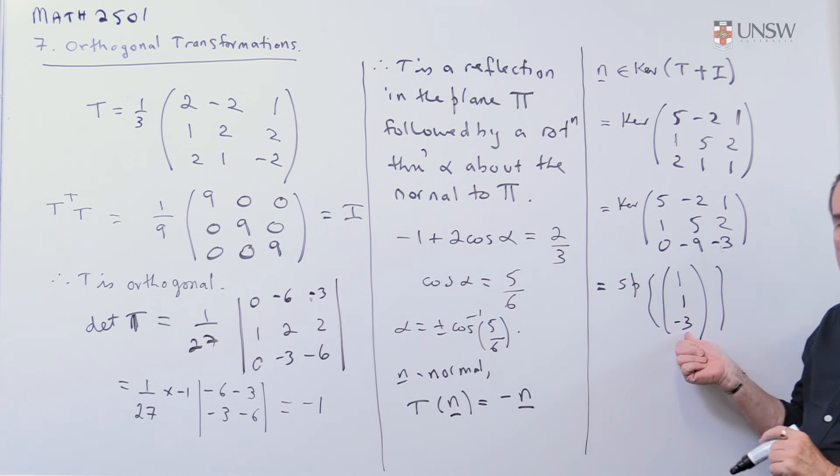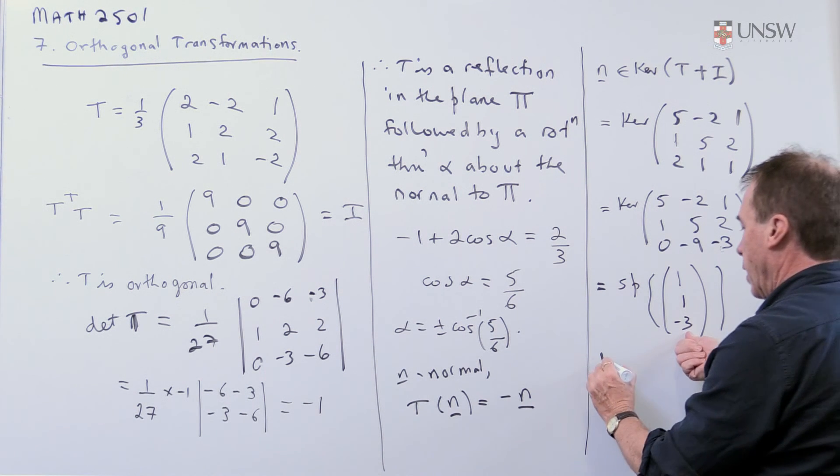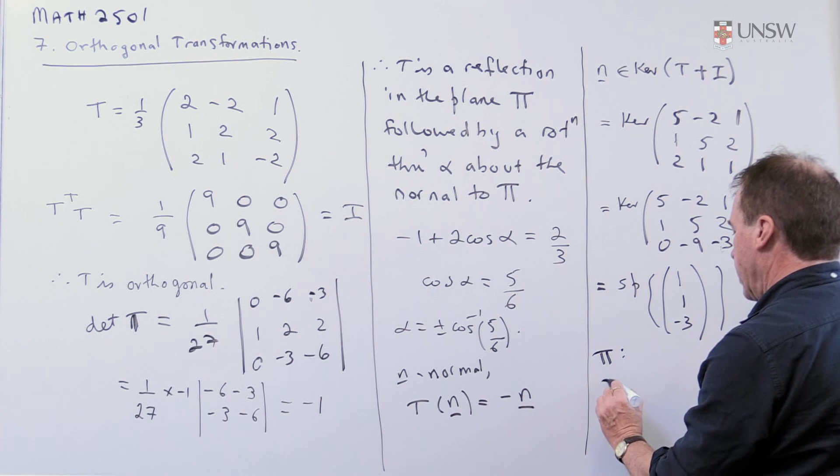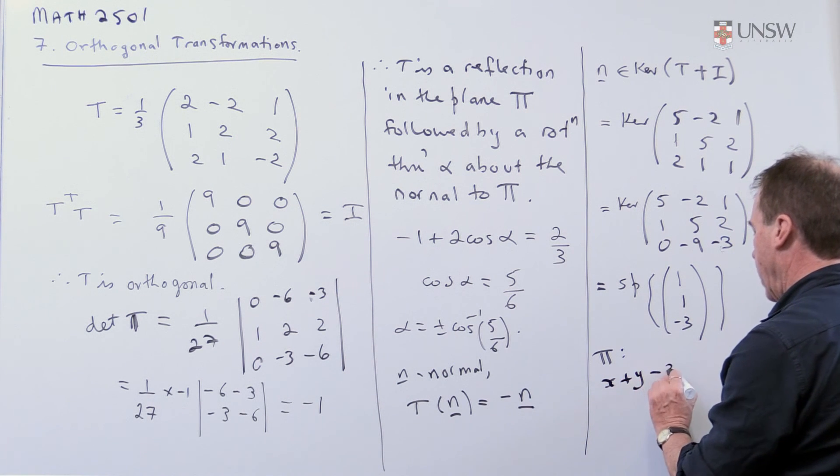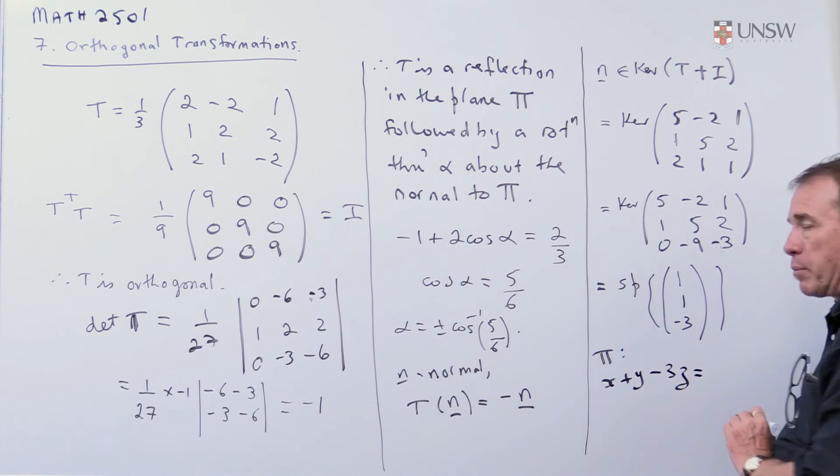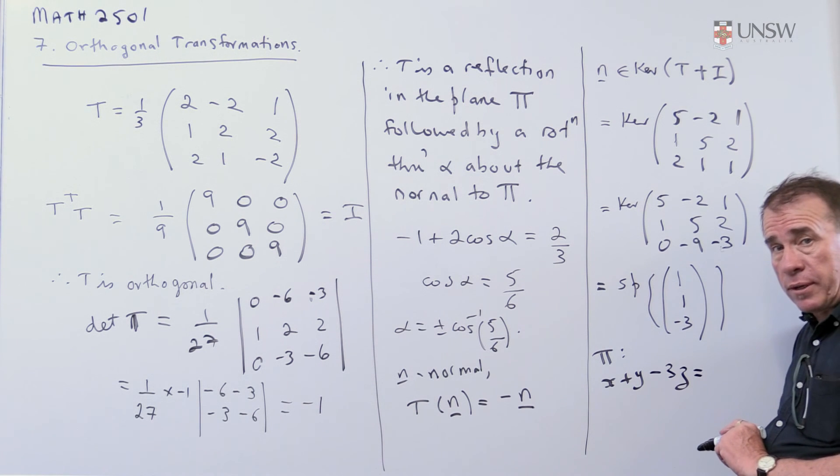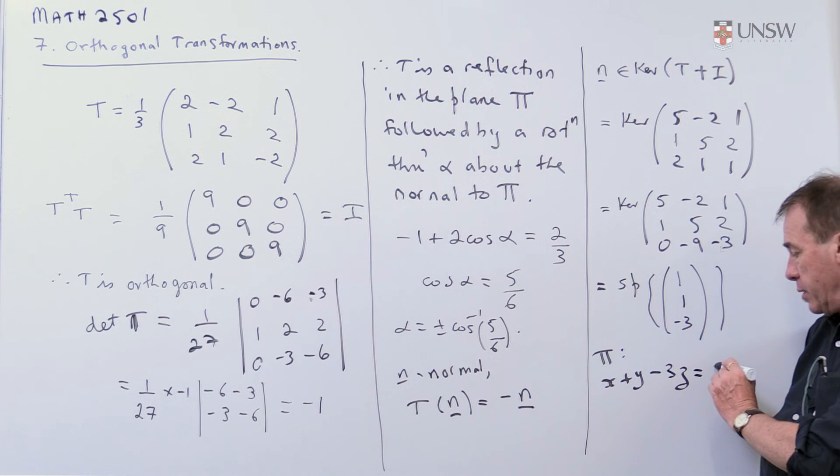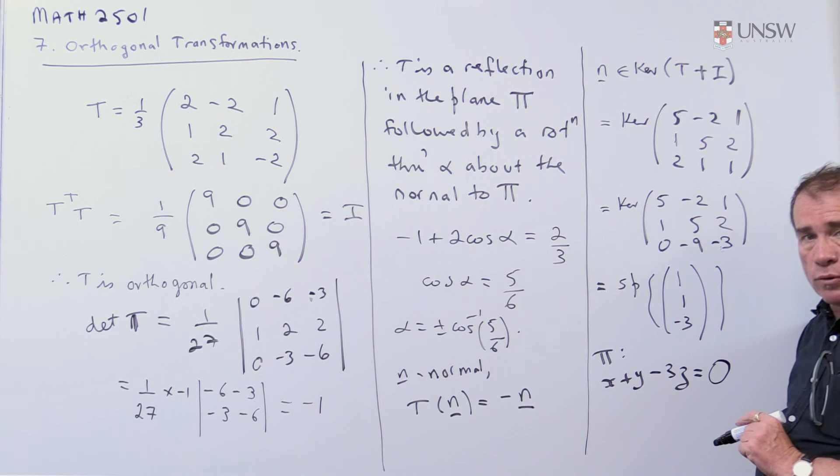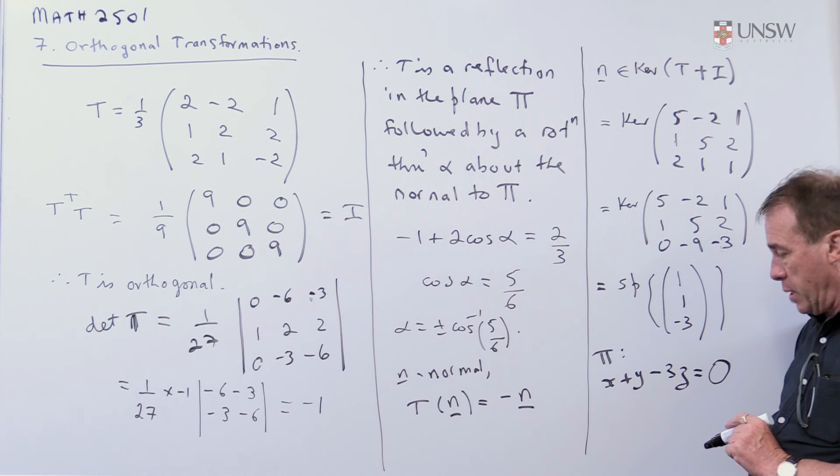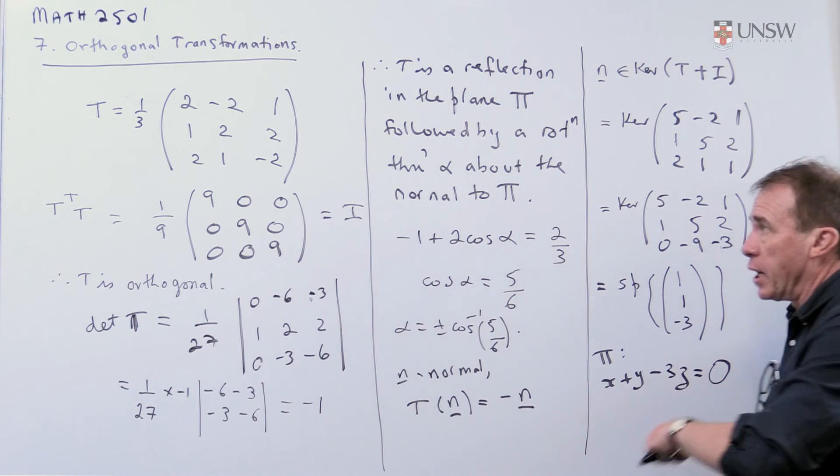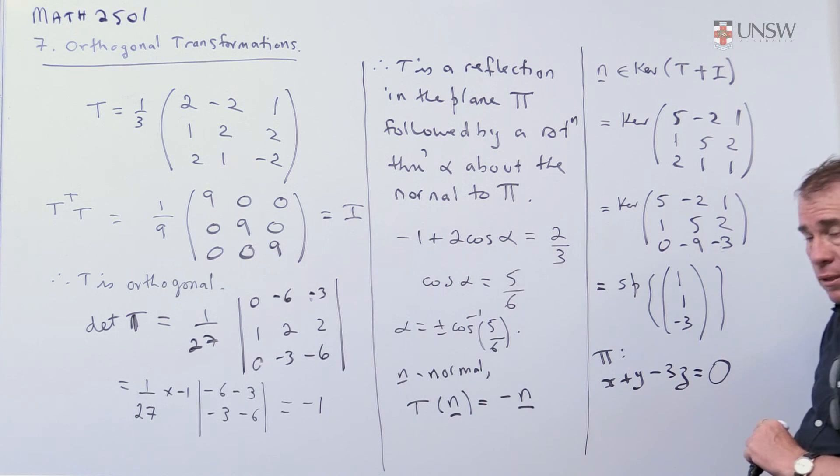So this I can take as a normal to the plane. So the plane pi, then, is just x plus y minus three z. The plane has to go through the origin. Think about why that is. Because the zero vector will not move under this transformation, nor will it change when you multiply it by the matrix. So it's going to go through the origin, and there's the plane.